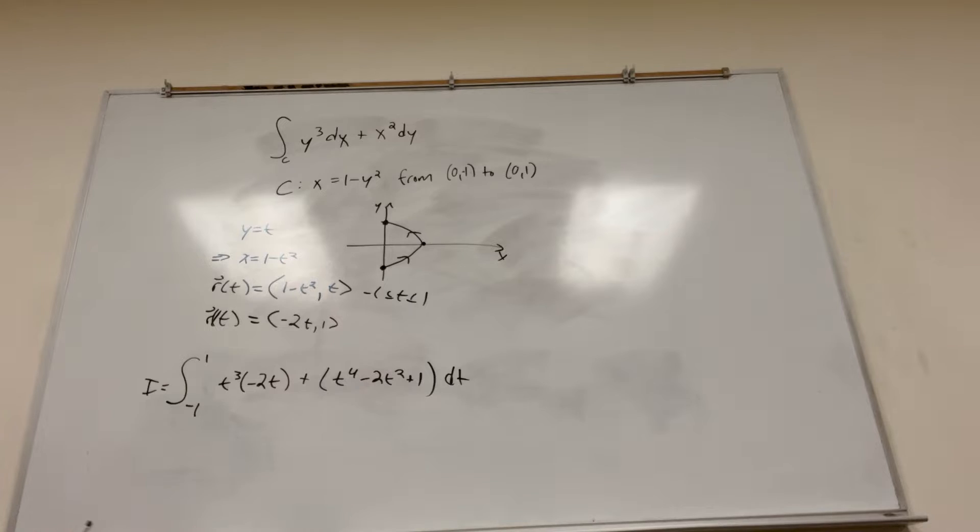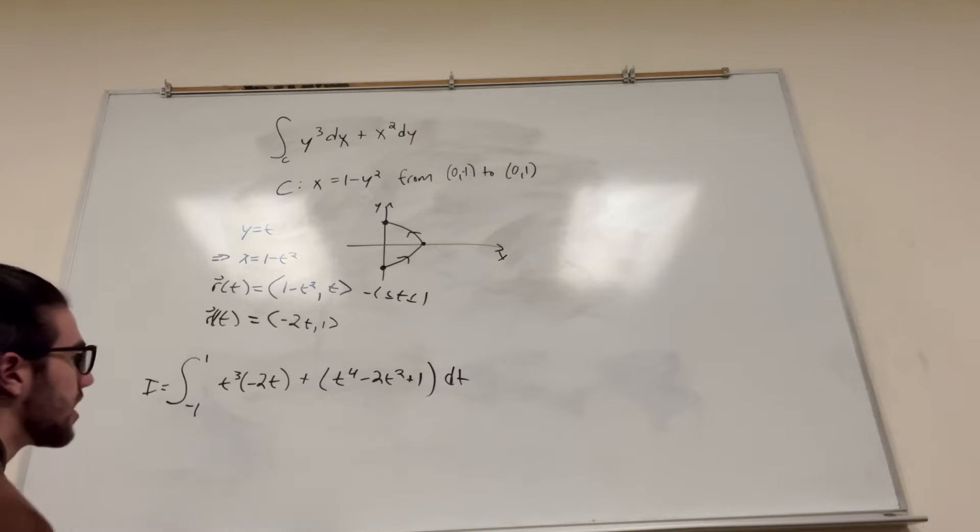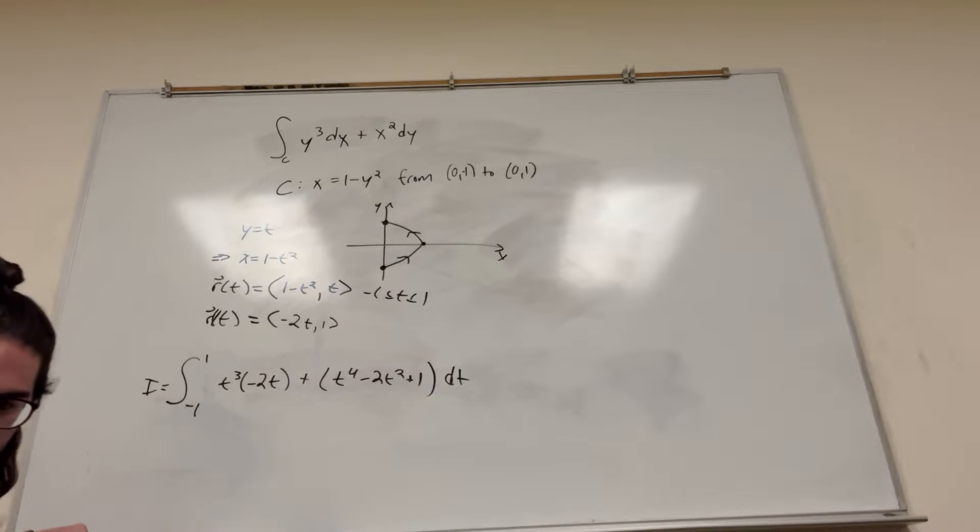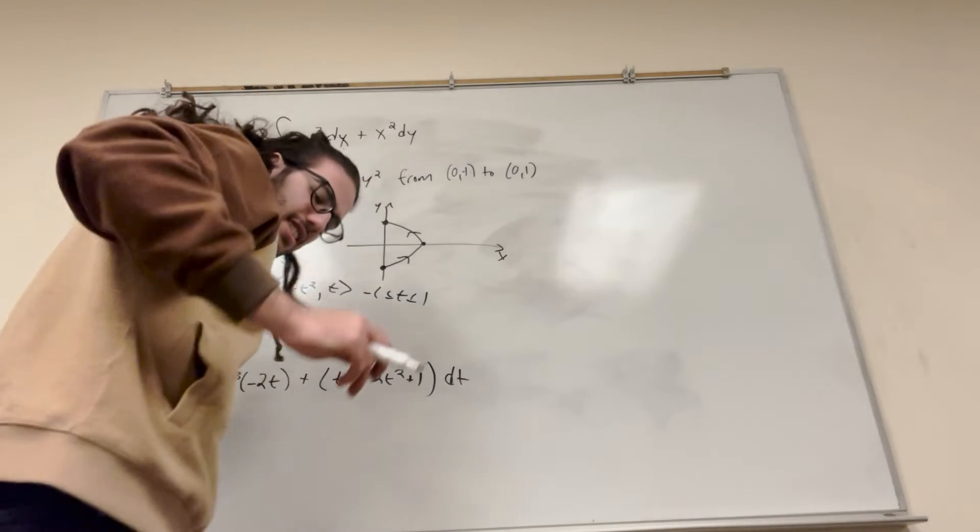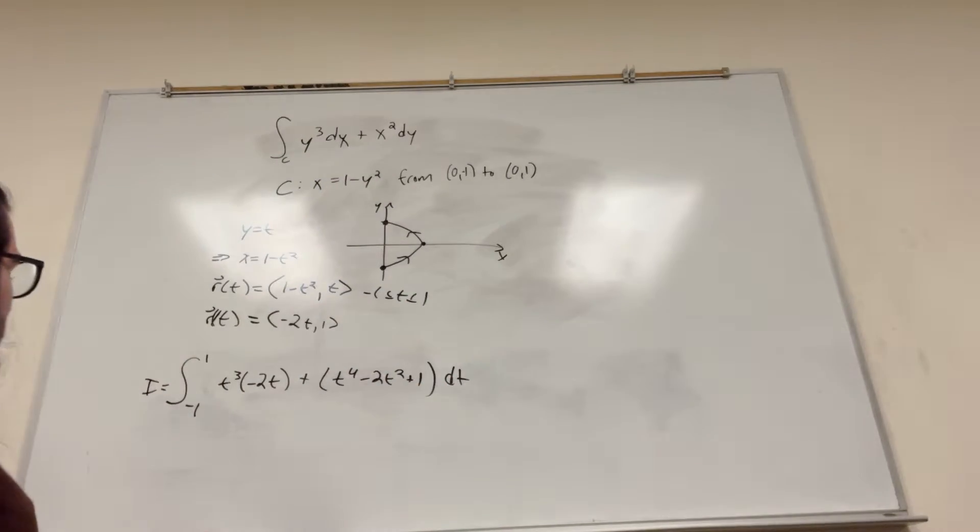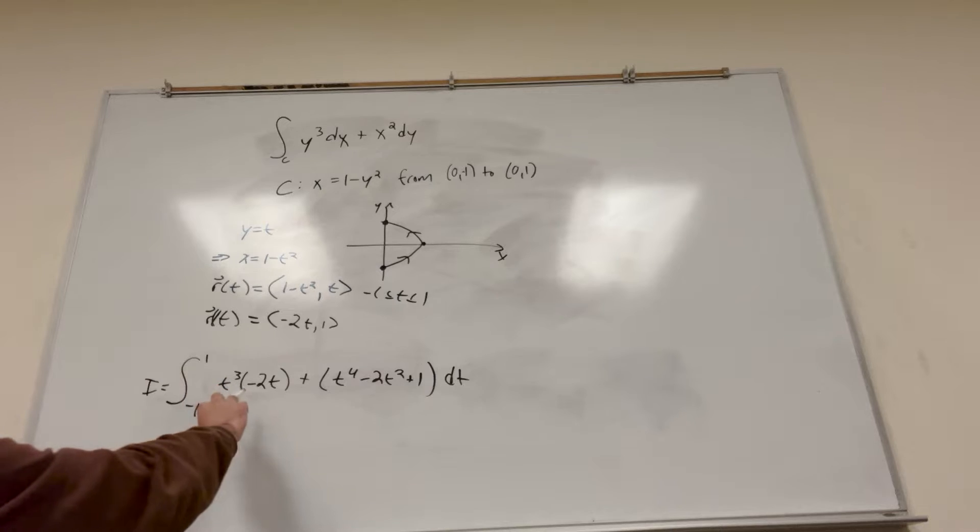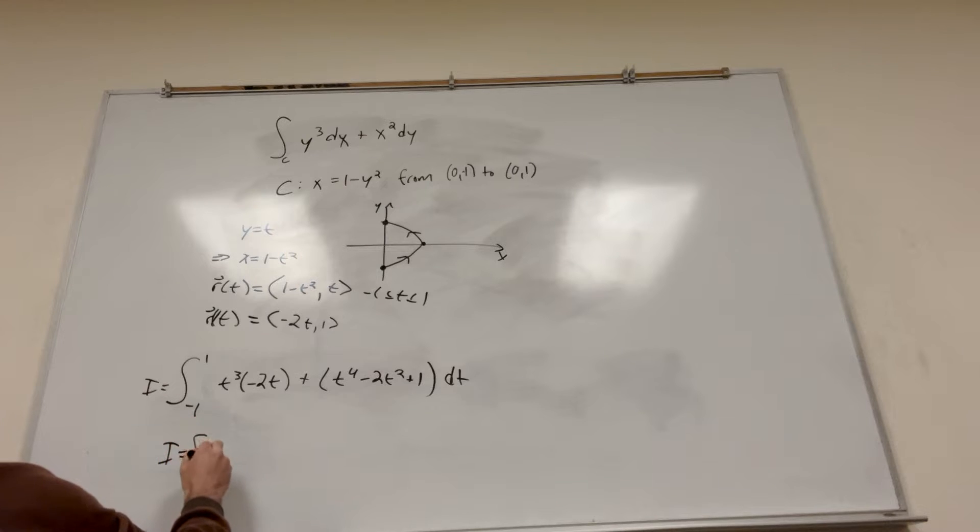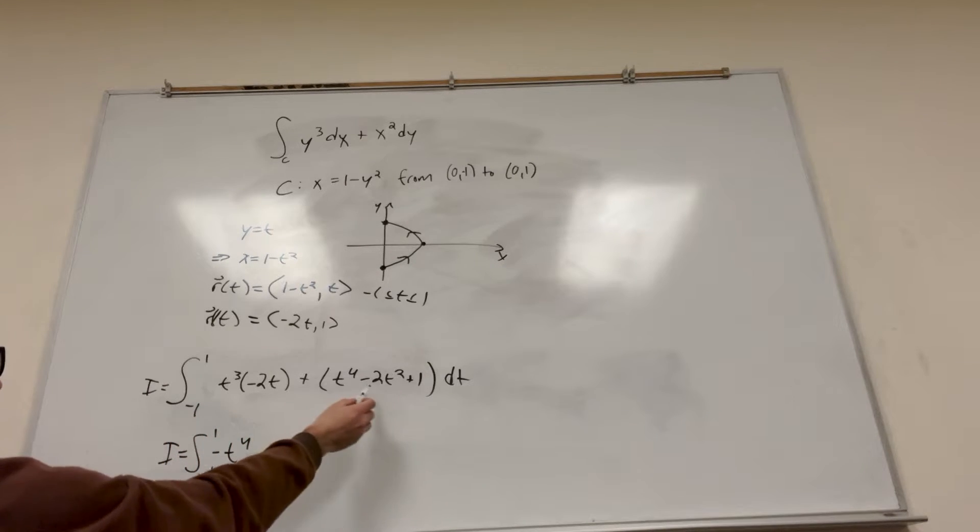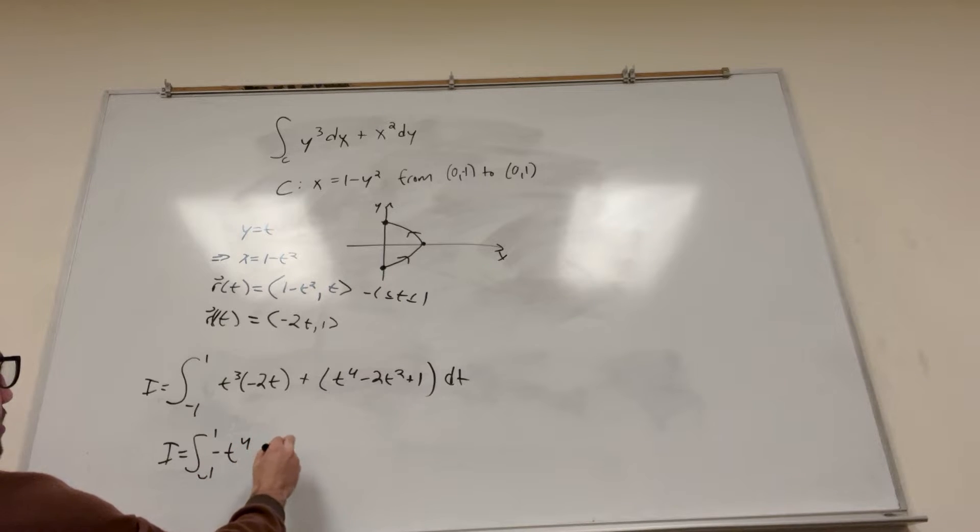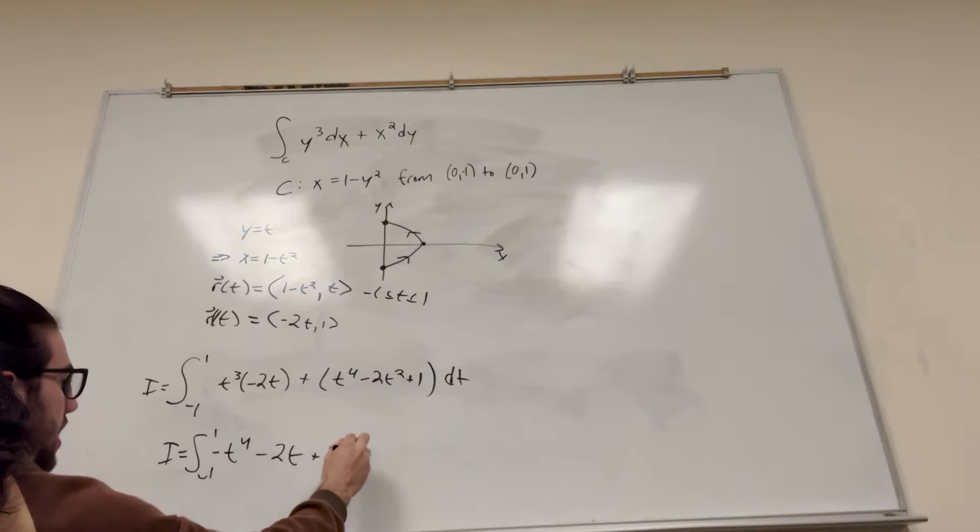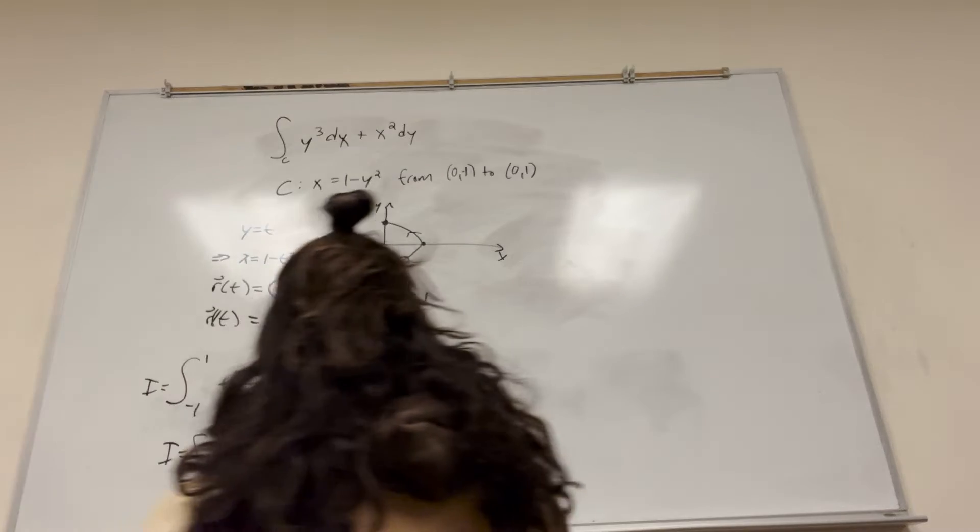All right. So now we have to simplify this, and we can solve it. So let's go ahead and do that. I'm going to get a chair over here. I'm not sitting on the floor today. Okay. All right. So we can see that this is going to be -2t⁴. And we have 1t⁴. So it's going to be -t⁴, is how this is going to simplify. So it's going to be -t⁴. And then we have a -2t, so minus 2t plus 1, dt. All right. I'm going to go over here to solve this.